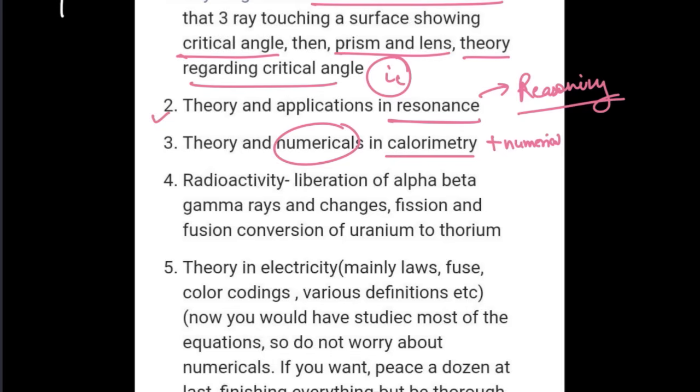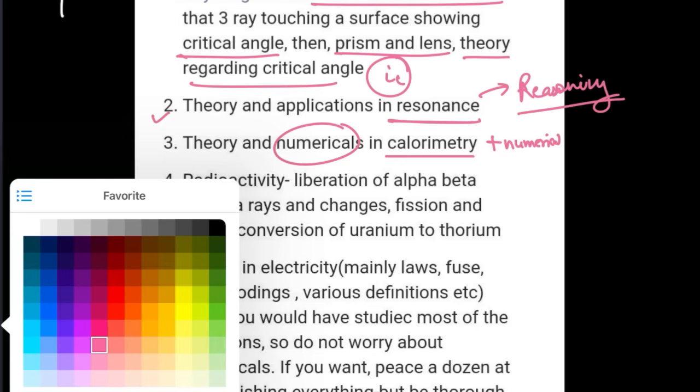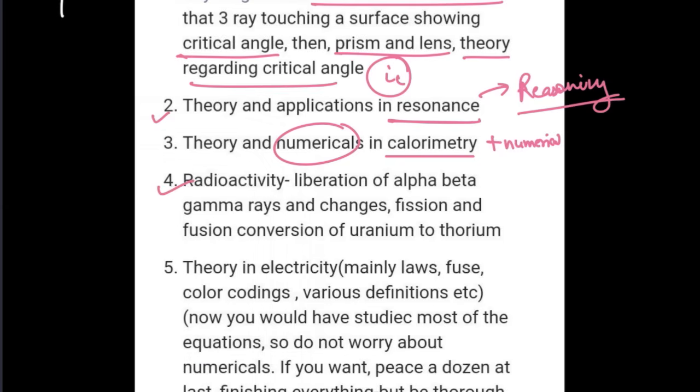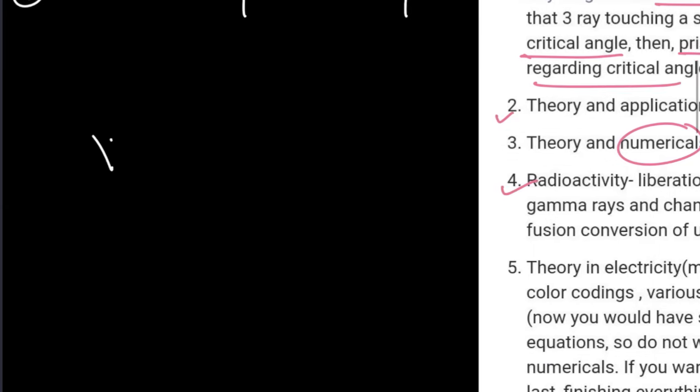Then radioactivity - in radioactivity you have seen they will give you X, for example this is 240 and this is 80, so they'll ask you what will be the result of A, what will be the result of C. These are the questions that are usually asked.